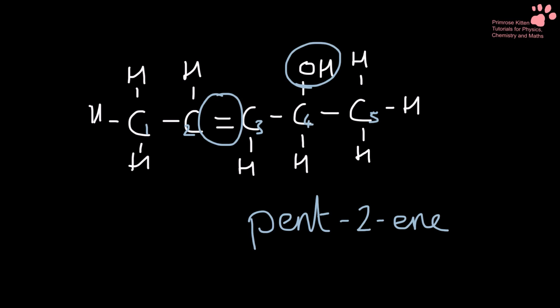We can see we've got the alcohol group on number four and we change it ever so slightly. So we don't put it at the end, we put it at the beginning and it becomes 4-hydroxypent-2-ene.